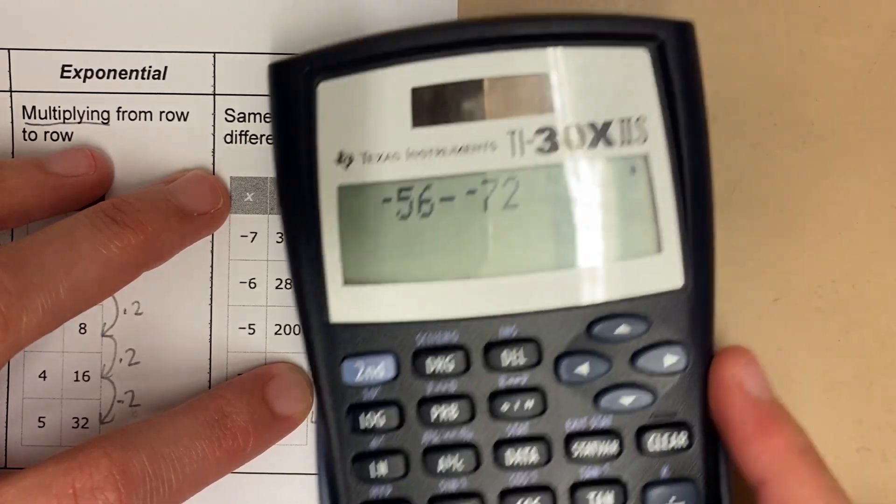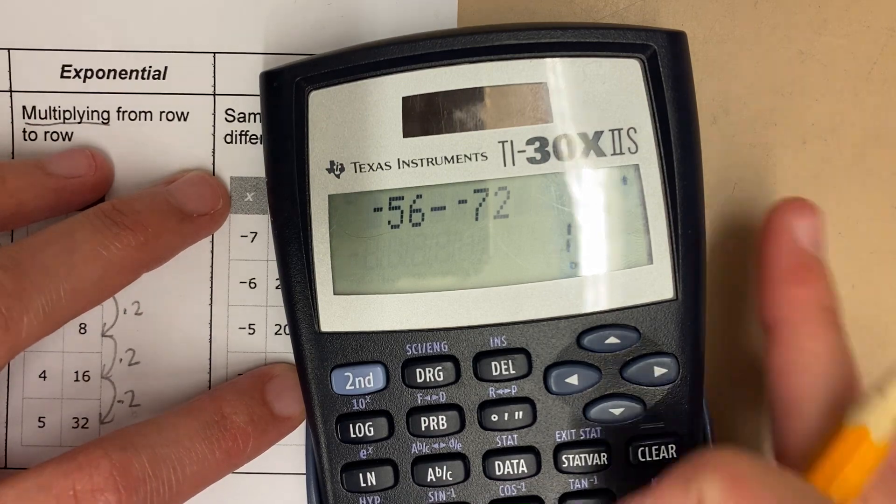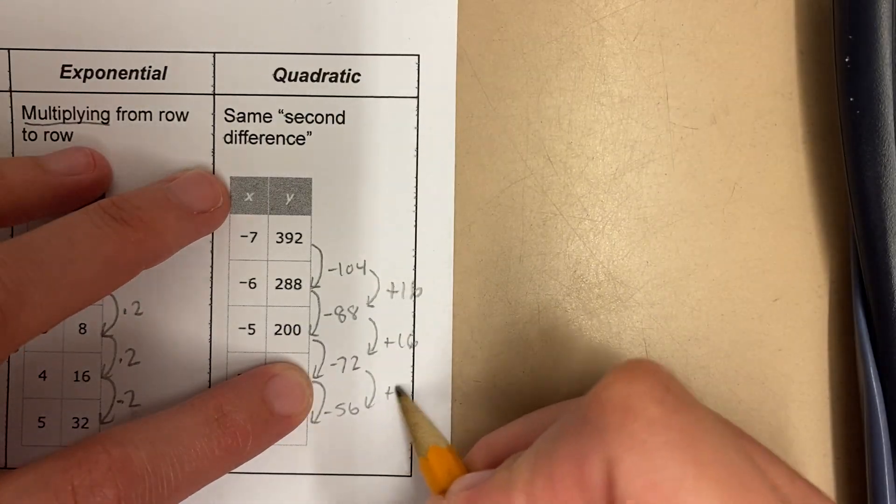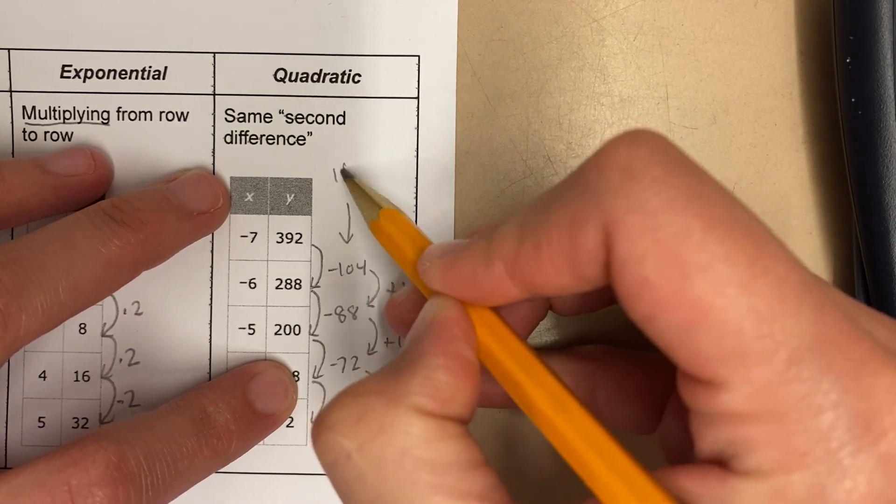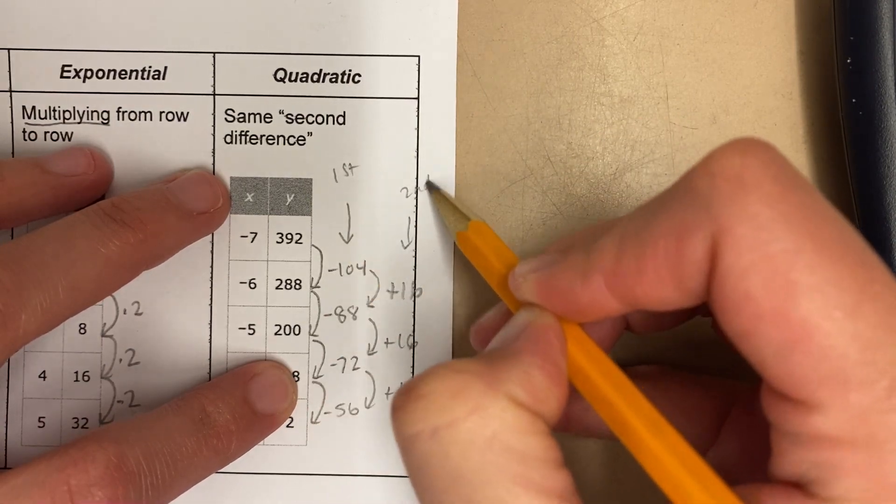This is negative 56 minus negative 72. That's also plus 16. See how that's the same second difference. First difference and second difference.